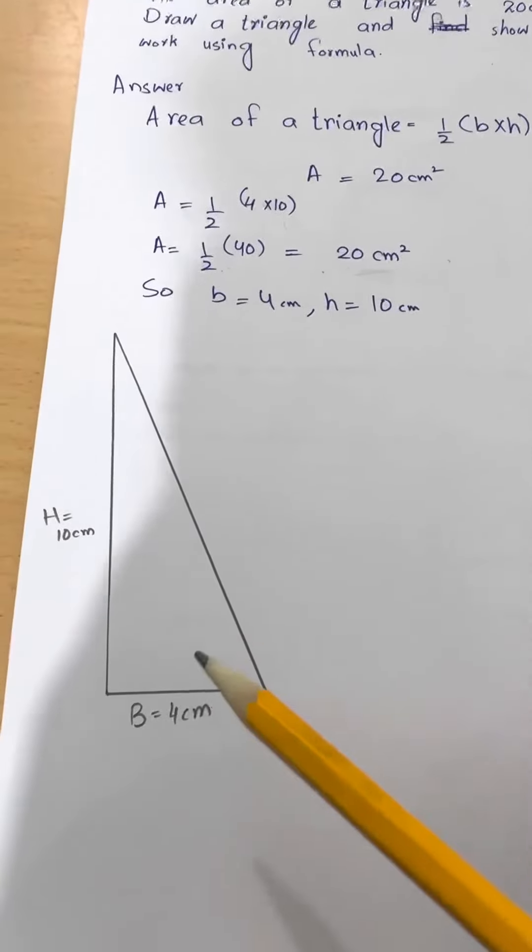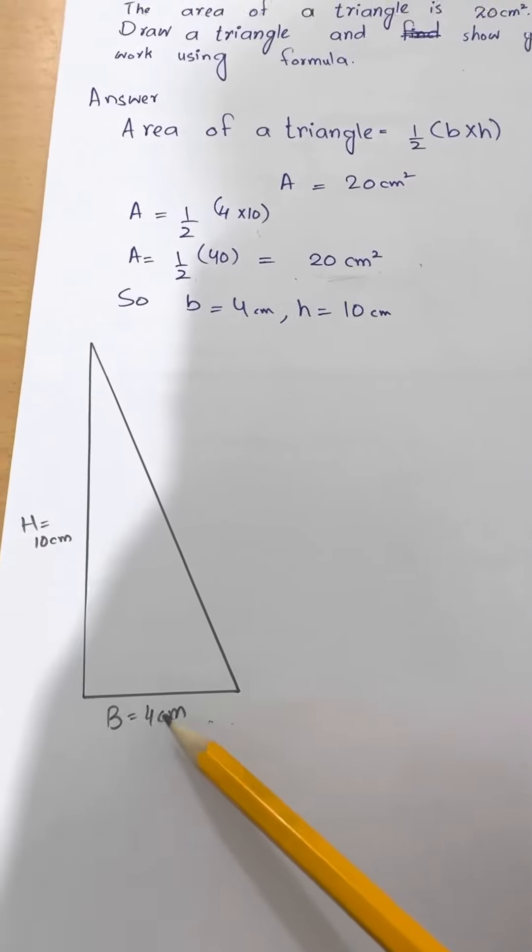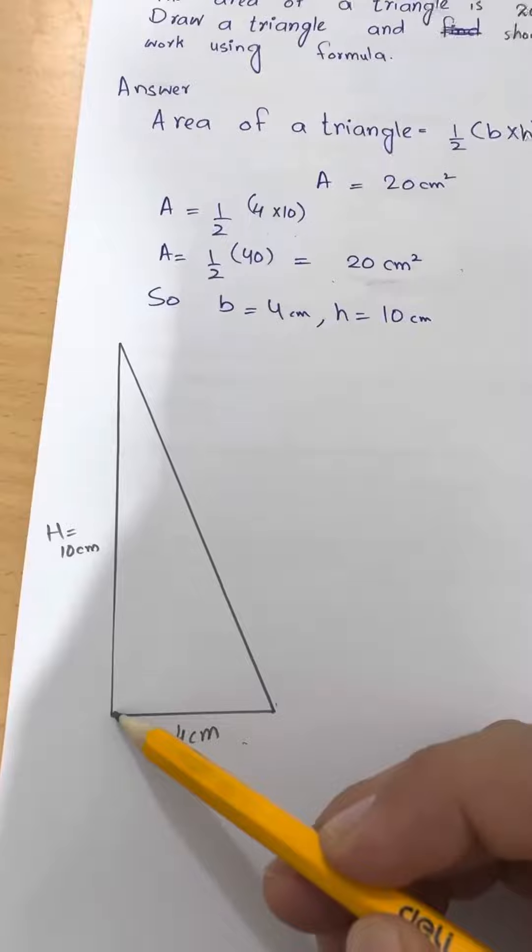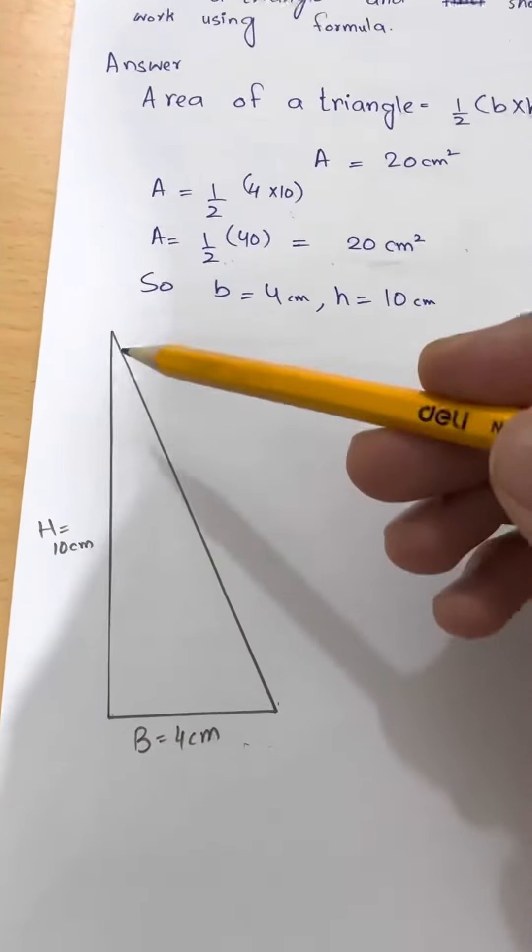The next is you need to draw it. So, take a ruler, first draw the base, which is 4 centimeter, and then the height. The height you can draw on this corner or if you like in this corner also or in the middle also. Height is always perpendicular like the straight line.